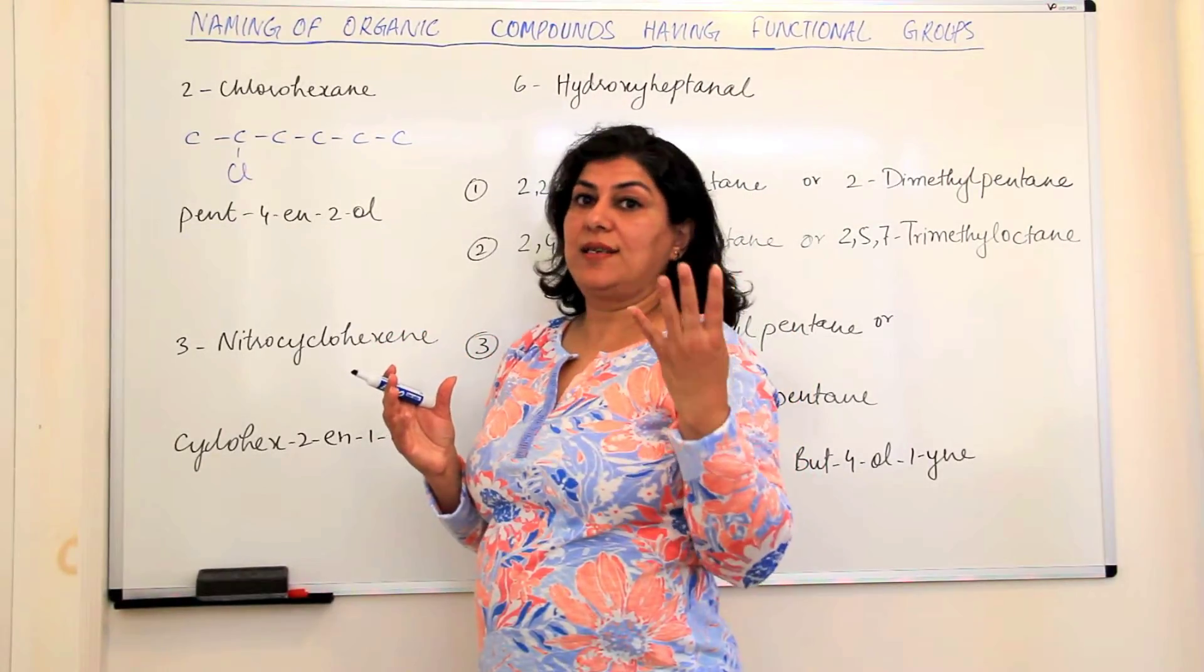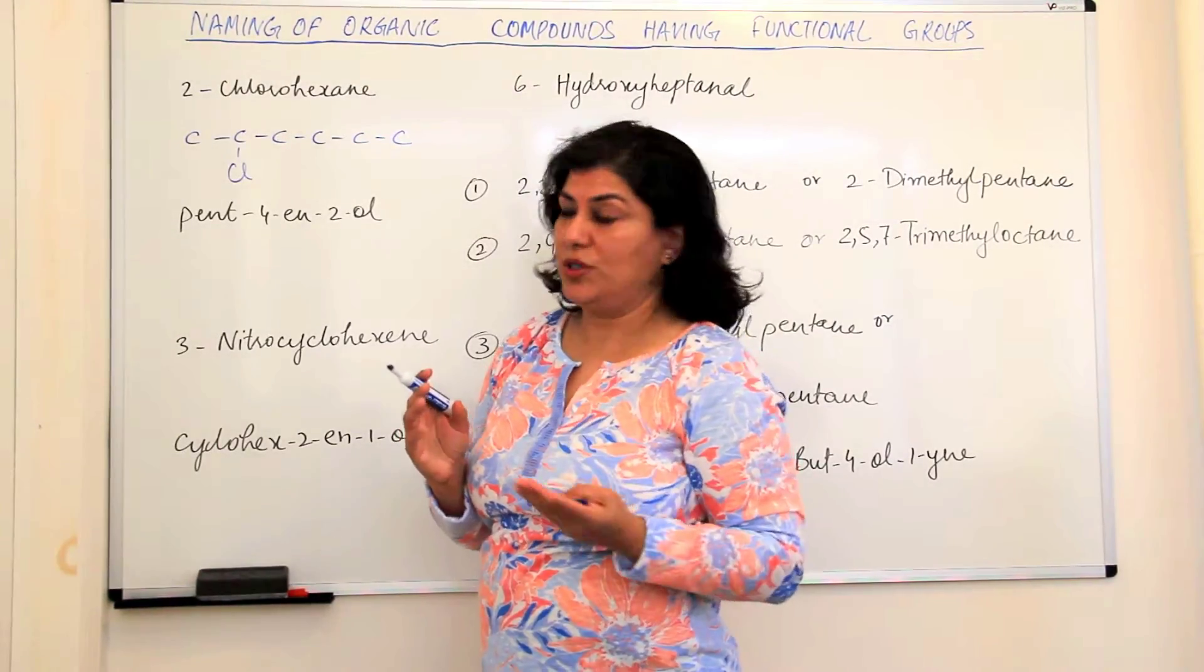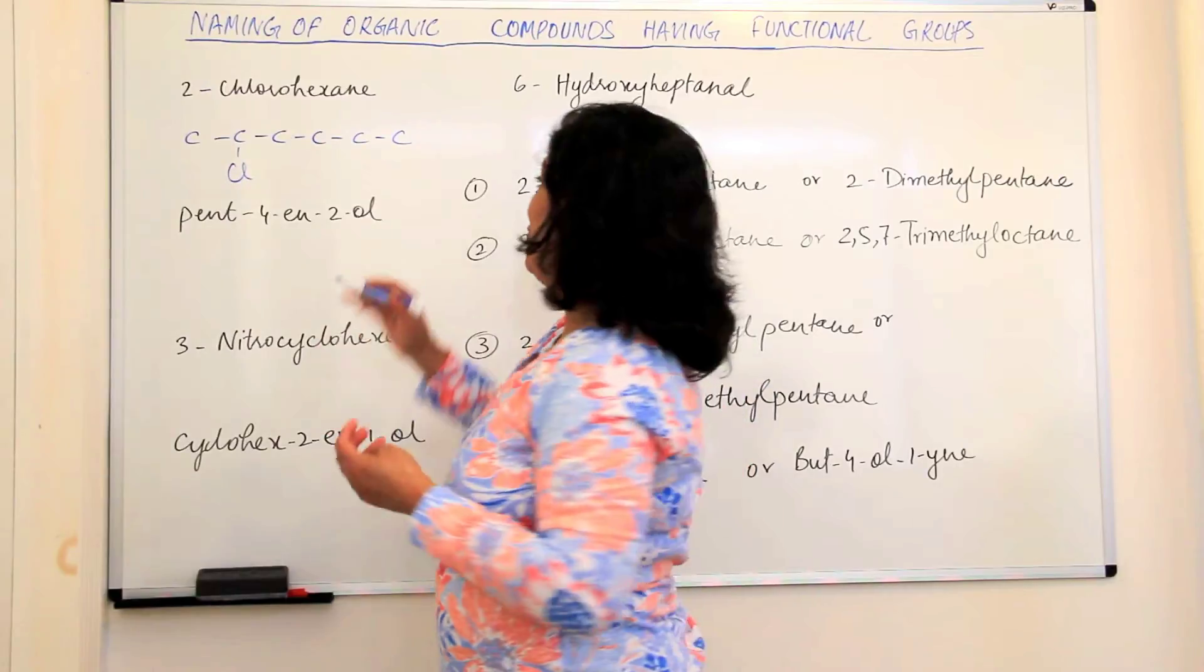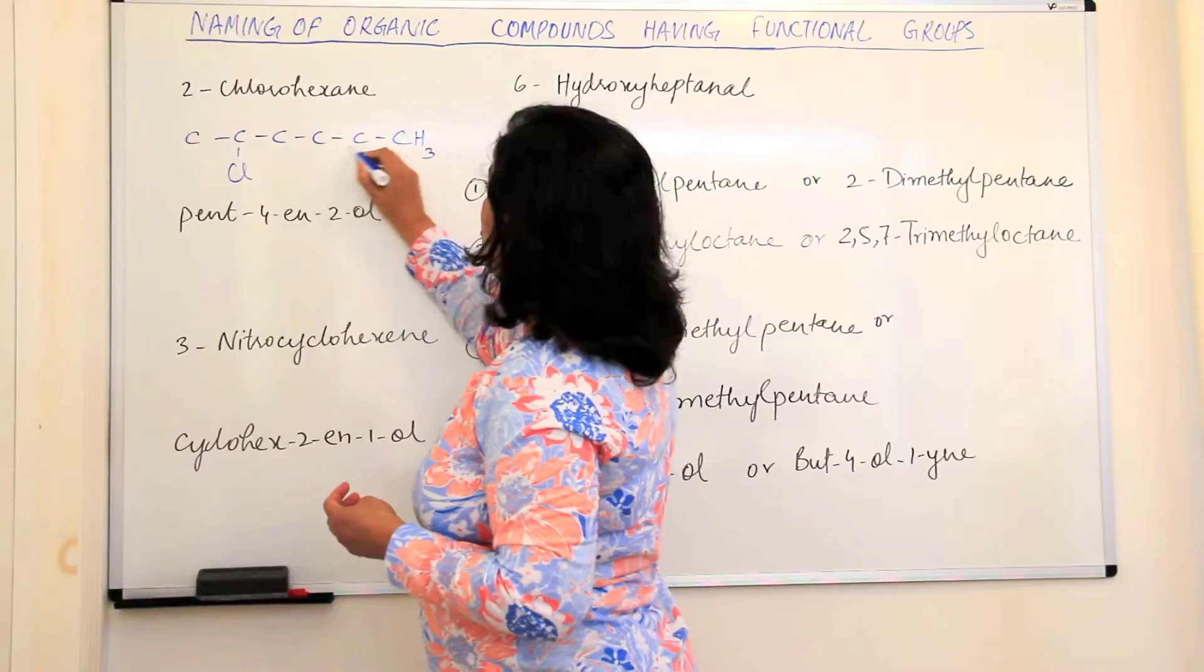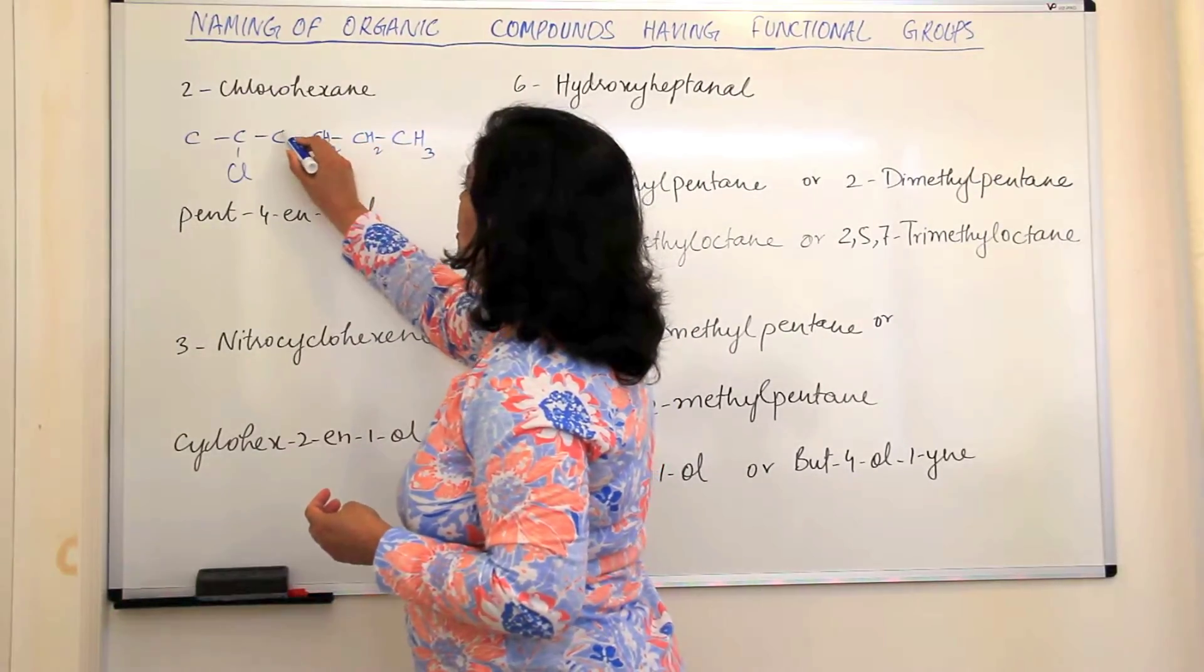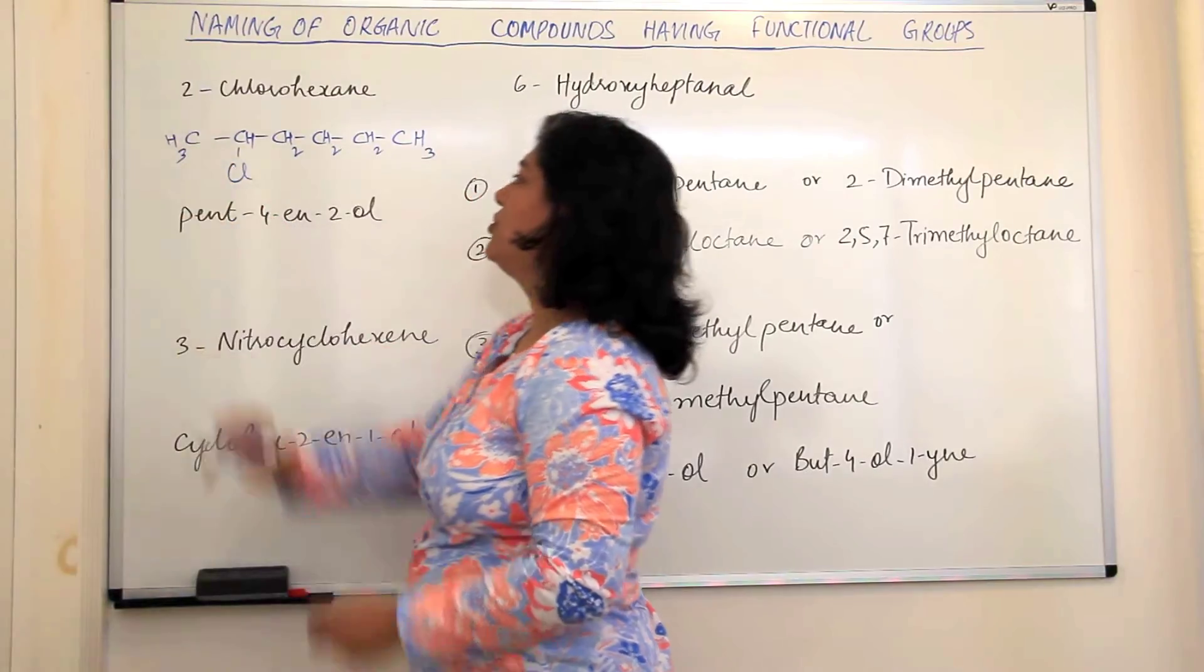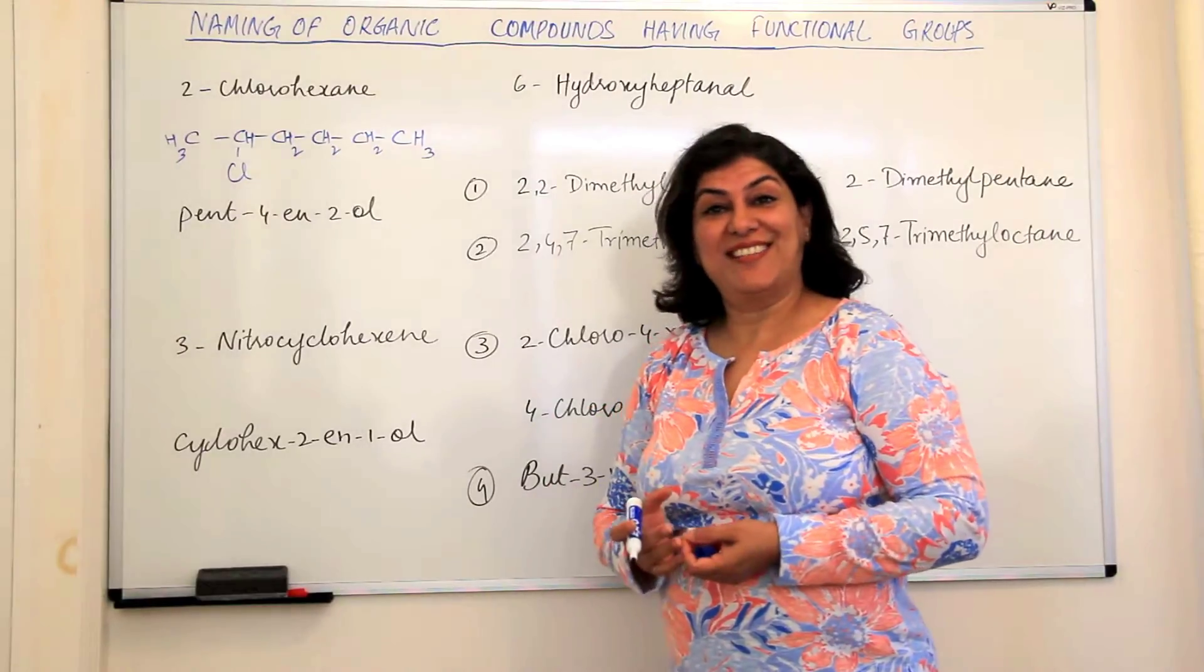Every carbon has a tetravalency - it is combined to four other atoms or forms four bonds. So we have to make sure that every carbon forms four bonds. All empty spaces must be filled up with hydrogens. This is one bond, so hydrogens would be three. These are two bonds, so there should be two hydrogens. This already forms three bonds, therefore there should be only one hydrogen here and this is only one, so there should be three hydrogens here. So this is the structure of 2-chlorohexane.